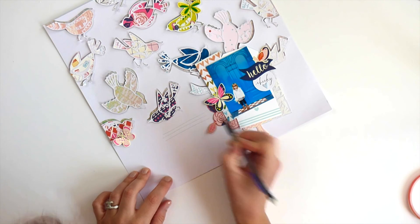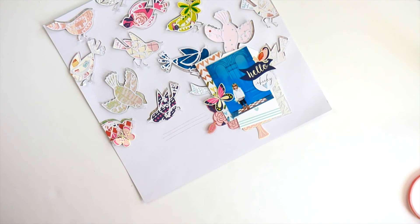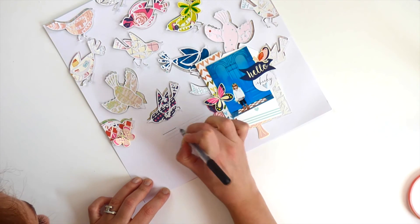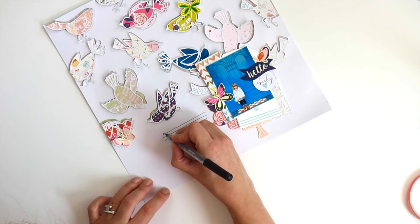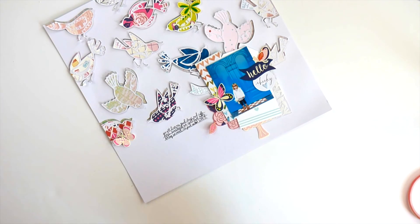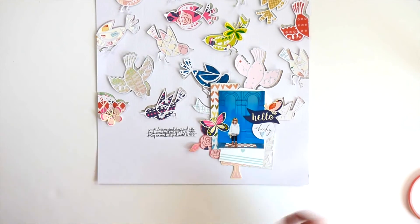And now the final touch is to add some journaling. I like to use a pencil first. So I know that I want my journaling to go there rather than drawing it with a pen first which is permanent. So I'll write my journaling and then erase any leftover pencil marks.